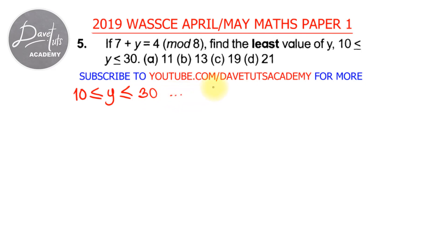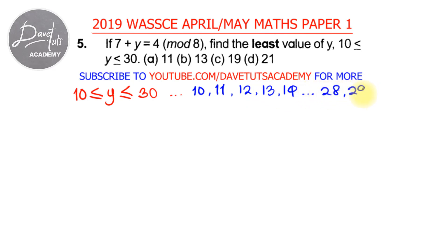This implies that the values of y we can use start from 10. We have 10 because they said less than or equal to, so that qualifies 10 to be there — so 10, 11, 12, 13, 14 up to 28, 29, and 30 is also included. These are the values that we are concerned about.